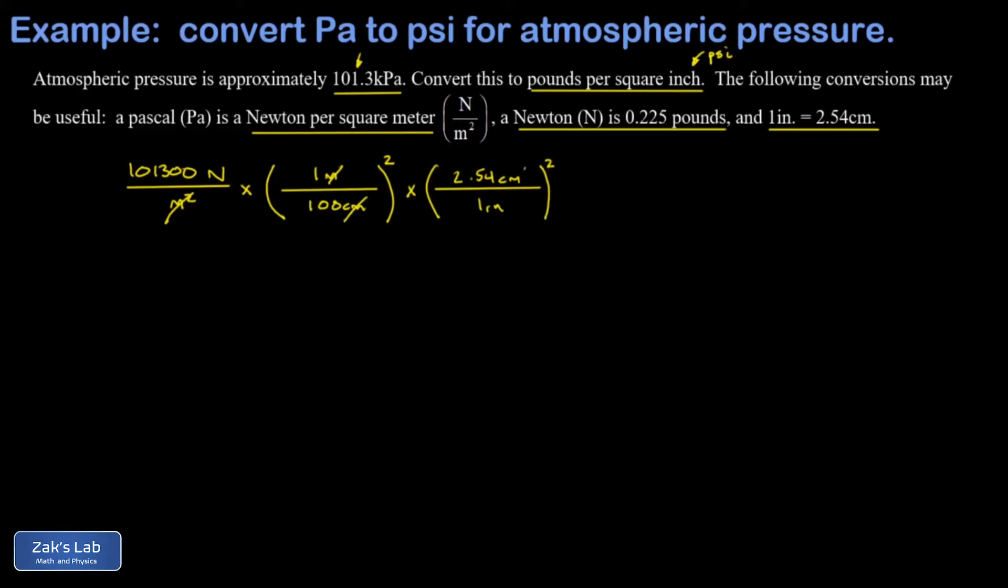So to cancel those, I need to square that conversion factor. And finally, it looks like I need to convert the newtons to pounds. So one newton is 0.225 pounds.